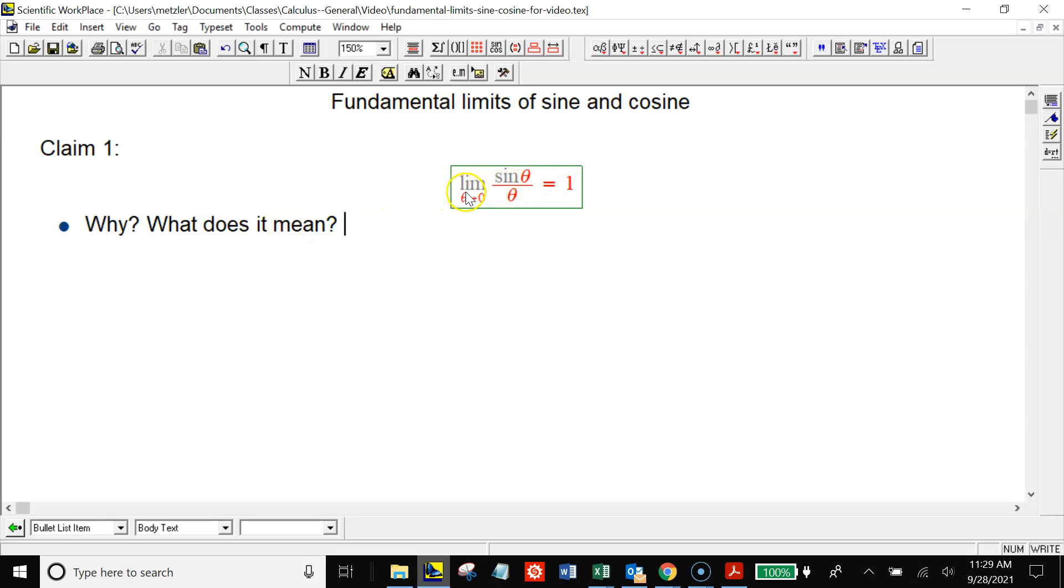So here's one. The limit as theta goes to zero of sine theta over theta equals one. So why would that be true? And first, what does it mean? We're actually going to prove it by really interpreting what it means in a little bit looser sense. What we're doing is when you take the ratio of two quantities, a lot of the times what you're doing is you're just comparing those quantities. It's not so much that you want to get the one number that's the fraction. You're actually looking at a ratio, and you're looking at how does the numerator compare to the denominator.